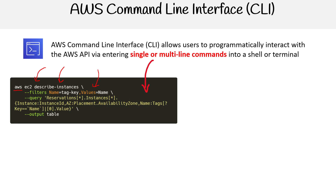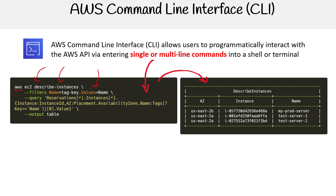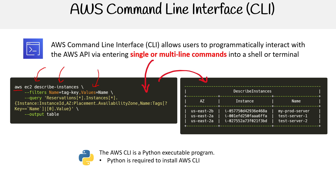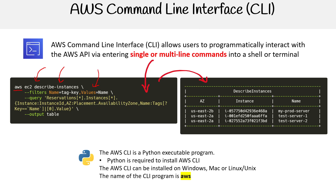It's all text, so the idea is that we input that and we get an output. The AWS CLI is a Python executable program. CLIs can be written in whatever language people want to write them in, but when they're packaged to you, you might not realize there's an underlying language. It is good to know what the underlying language of the CLI is so that you have all the requirements to run it. So Python is required — it has to be on your system to install the AWS CLI. The CLI can be installed on Windows, Mac, Linux, or Unix. The name of the CLI program is called AWS.